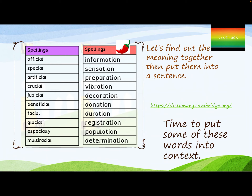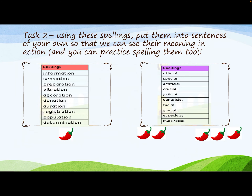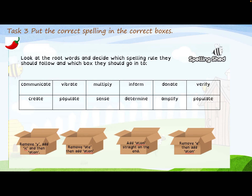So what I want you to do is put some of these words into context. For your first task, find the meaning of your set of words and put them into context — put them into a sentence as well. It's really important for learning how we can use these words. Your next task is putting them into sentences, so it's sort of mixed in with the first task.